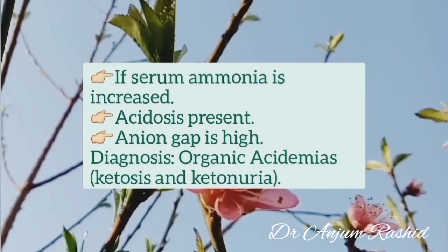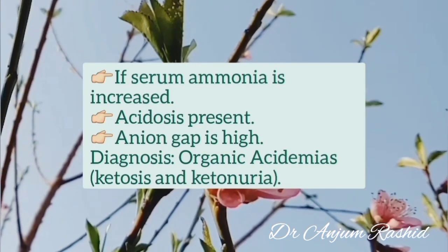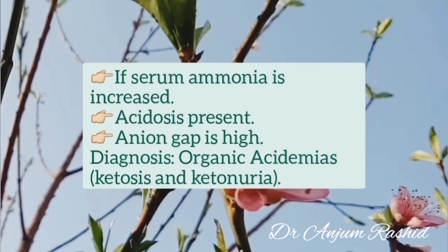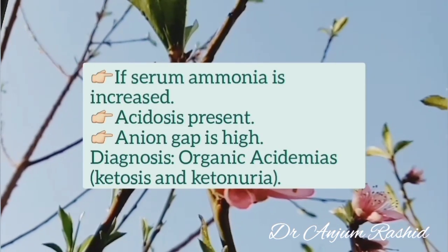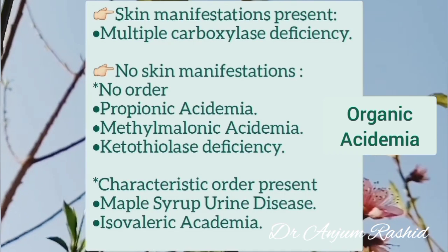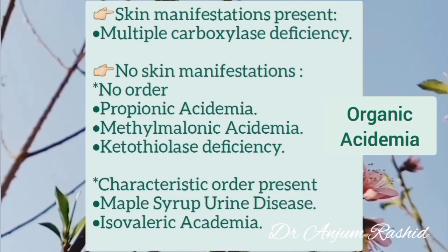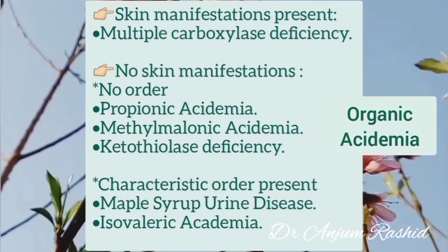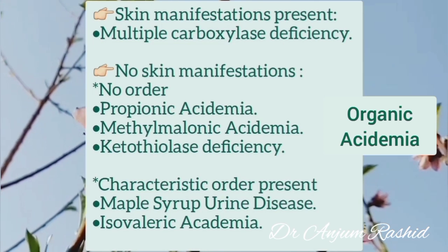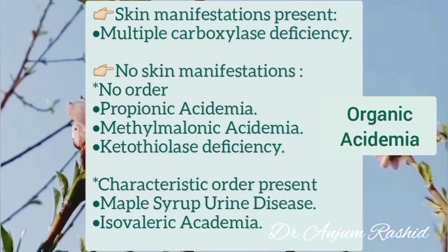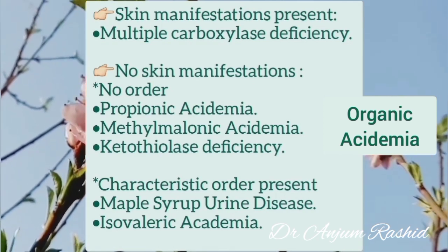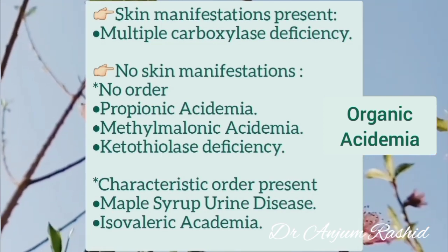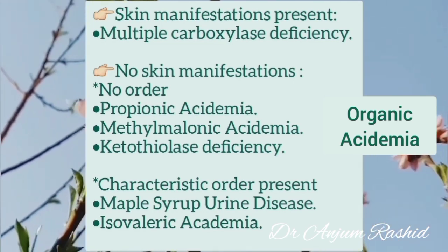If serum ammonia is increased, arterial blood gases show acidosis, and the anion gap is high, then the differential diagnosis is organic acidemia. In this case, there is also serum ketosis and ketonuria. Organic acidemia could be with or without skin manifestation. If the baby has a skin manifestation like a rash, think of multiple carboxylase deficiency. If there are no skin manifestations, check whether the baby has a particular odor. If there is no odor, think of propionic acidemia, methylmalonic acidemia, or ketothiolase deficiency. If the baby has a characteristic odor, think of maple syrup urine disease or isovaleric acidemia.